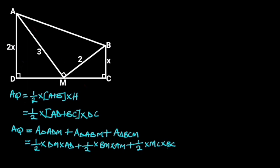Now let's focus on triangle ADM. Triangle ADM is a right triangle. If we call this angle alpha, then the remaining angle of this triangle will be 90 degrees minus alpha, since the sum of angles in a triangle is 180 degrees. Next, let's consider triangle BCM. Triangle BCM is also a right triangle. Notice that in this triangle, this angle is equal to 90 degrees minus alpha, since the sum of angles in a straight line is 180 degrees. So the remaining angle of this triangle will be 90 degrees.